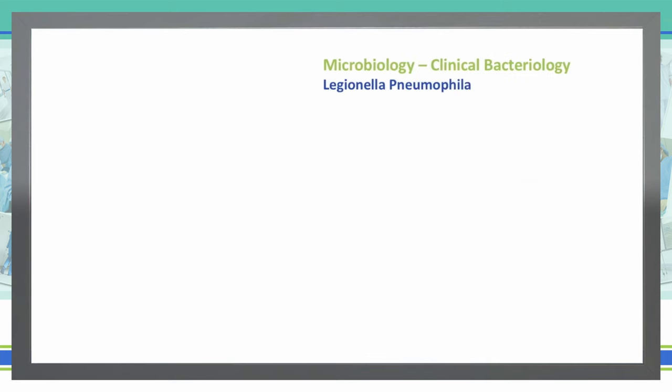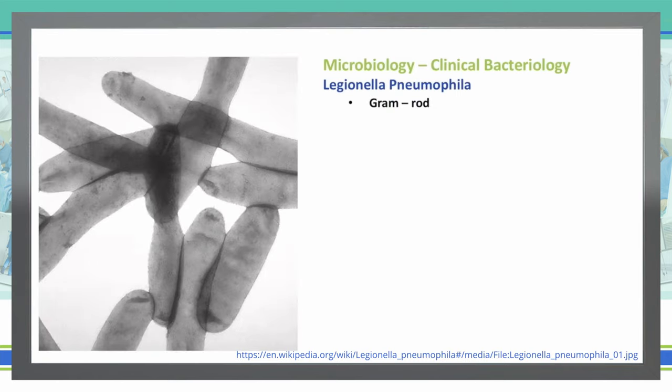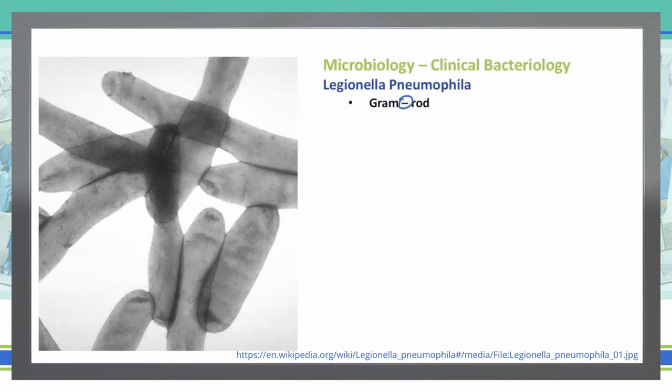Next we'll discuss Legionella pneumophila, which is a gram-negative rod. What you're seeing here is a transmission electron microscopy of the Legionella bacteria. We don't have really great pictures because the big thing with Legionella is that it stains poorly with gram stains, so oftentimes we use a silver stain to help us visualize this particular bacteria.